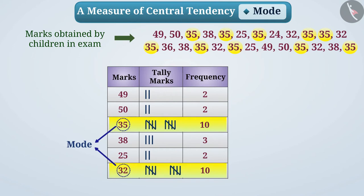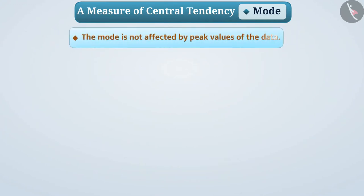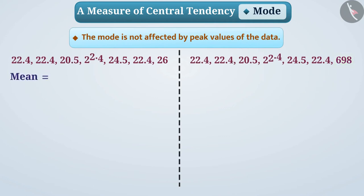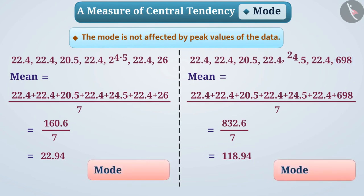Let's understand the characteristics of mode. The mode is not affected by peak values of the data. Look at these 2 groups of data — in the second group, the peak value is 698, which is extremely large, while the remaining numbers are the same. If we find the mean of each group, the extreme value 698 causes changes in the mean. But if we find the mode of these 2 groups, it is 22.4 for both. You can see that mode is more suitable here than the mean to represent the central tendency.